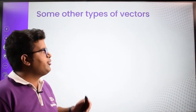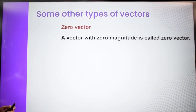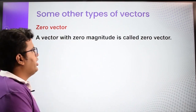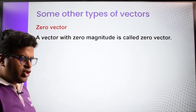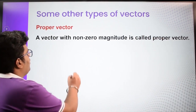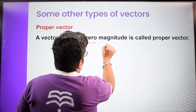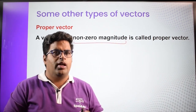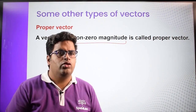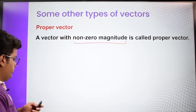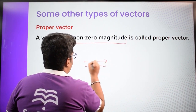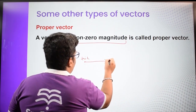Now let's see some other types of vectors. The first is the zero vector — a vector which has zero magnitude. Next is the proper vector, which is a vector having non-zero magnitude. For example, a vector with magnitude 3 or 4 is a proper vector. It has a length — meaning it has both a tail and a head.